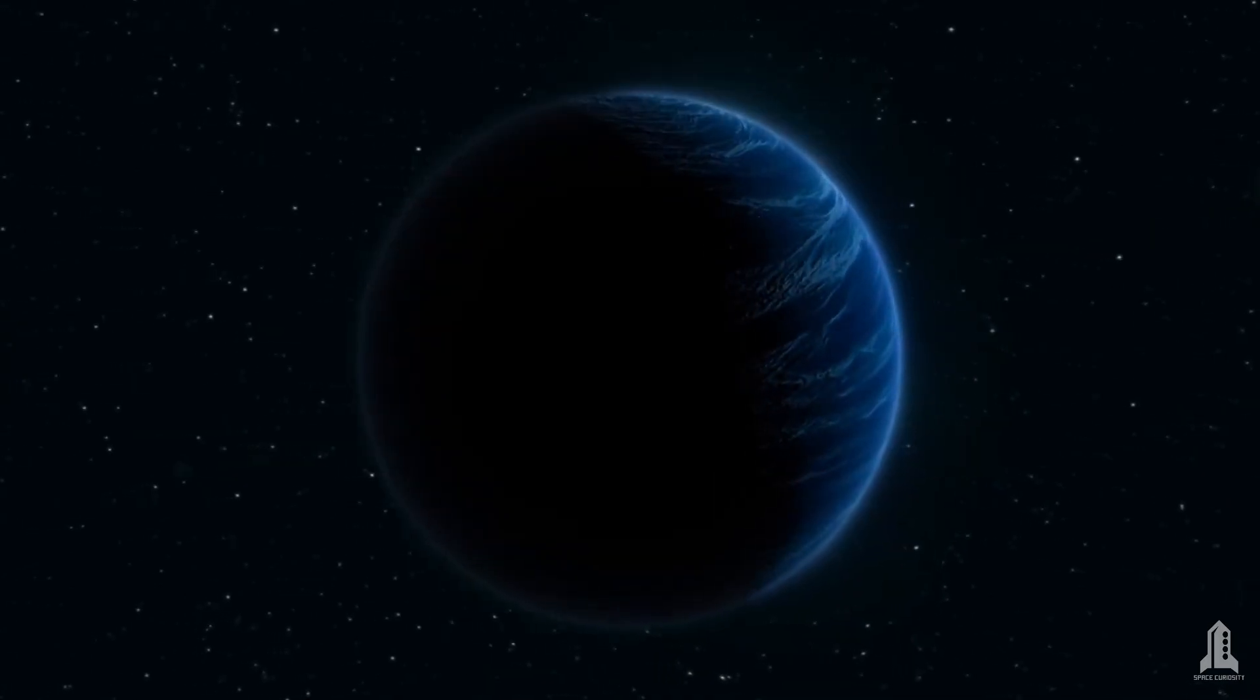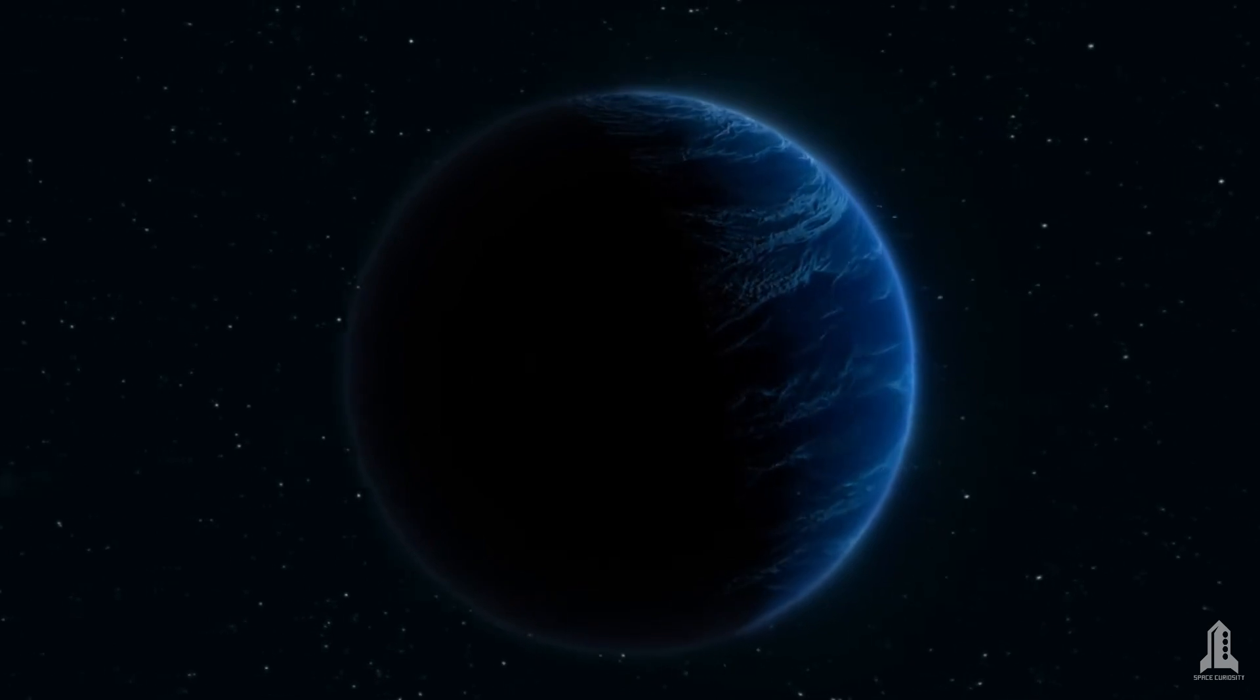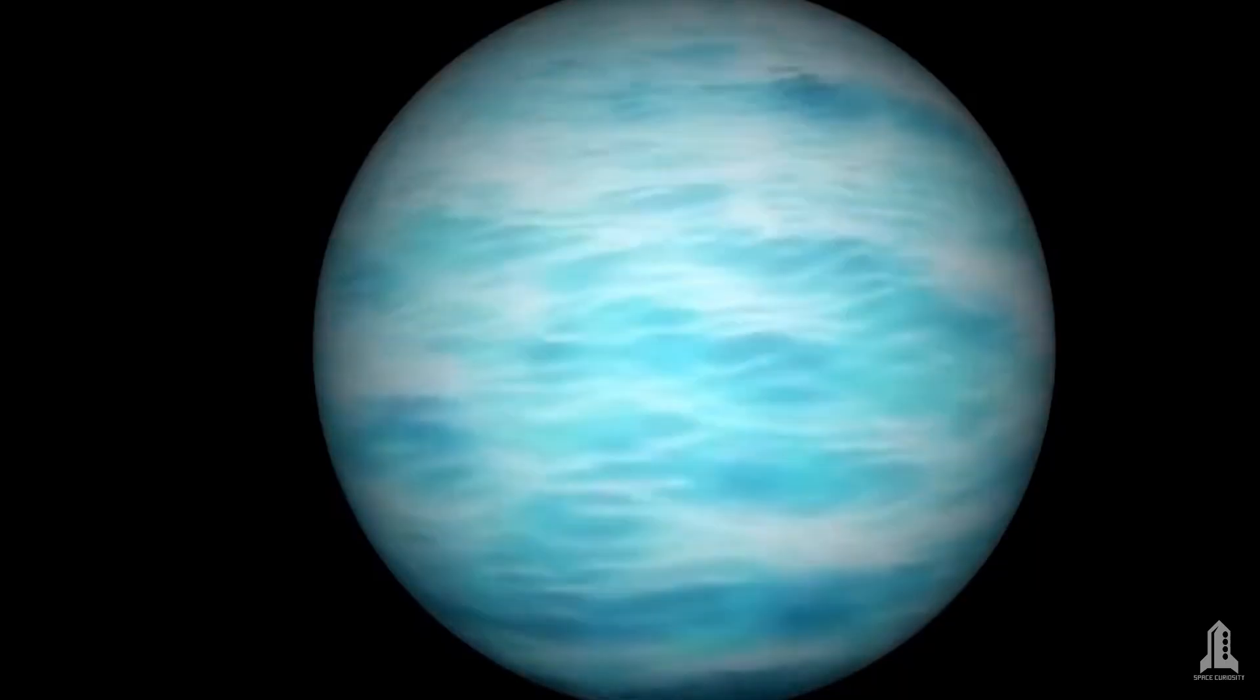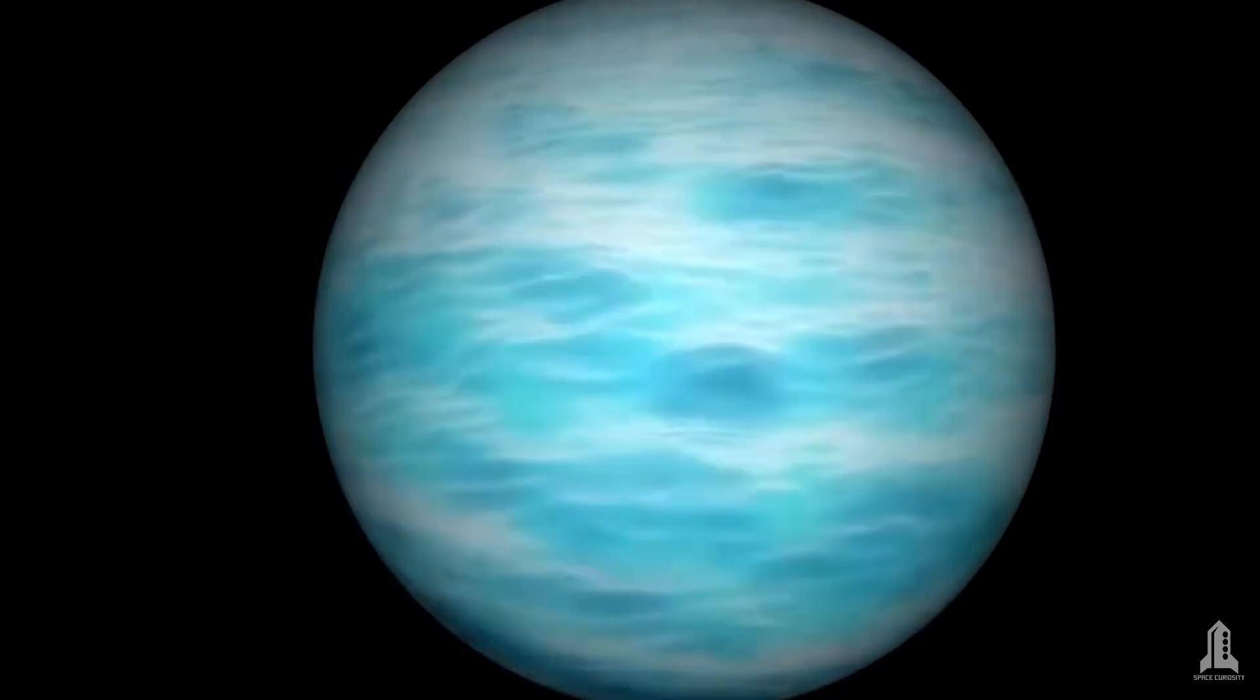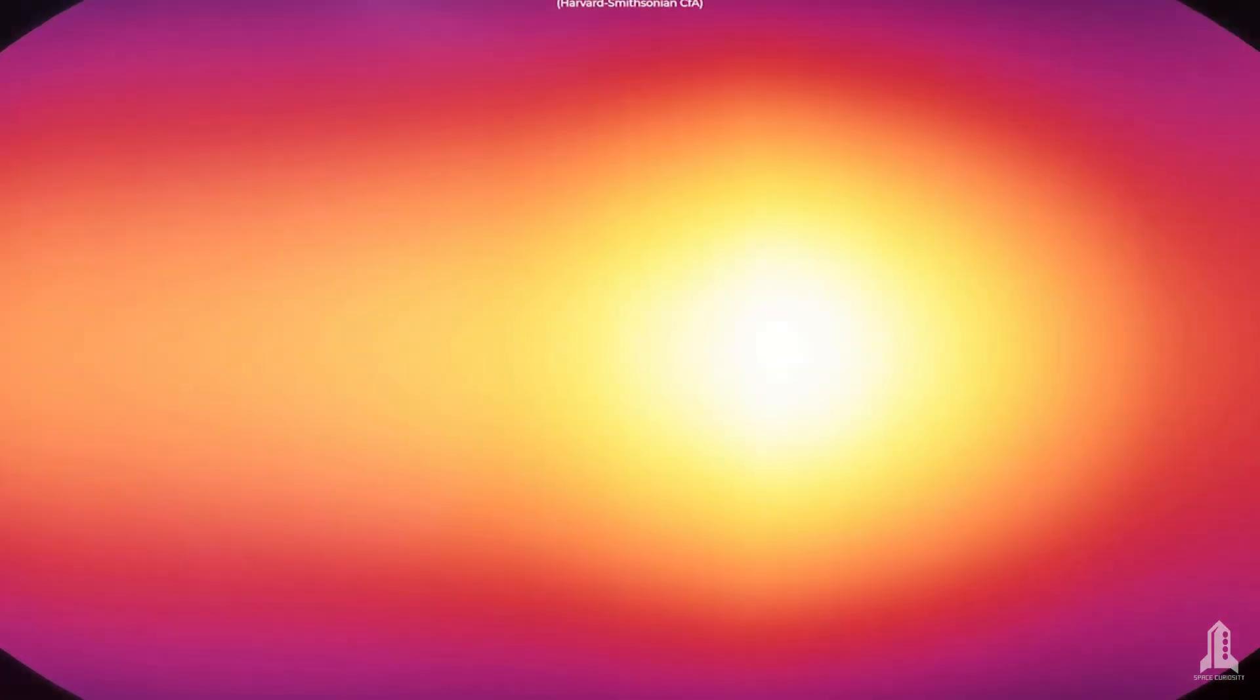One of the planet's most fascinating features is its atmosphere. Scientists have discovered that the planet appears in intense cobalt blue, but this coloration is deceptive. It is not caused by large blue oceans like on Earth, but by the presence of silicate particles in the atmosphere. At extreme temperatures that can reach 1000 degrees Celsius, these silicates condense into tiny drops of glass that reflect blue light.